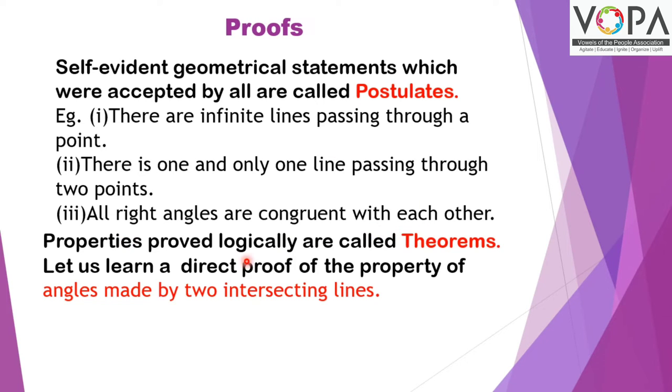Properties proved logically are called theorems. Let us learn a direct proof of the property of angles made by two intersecting lines.